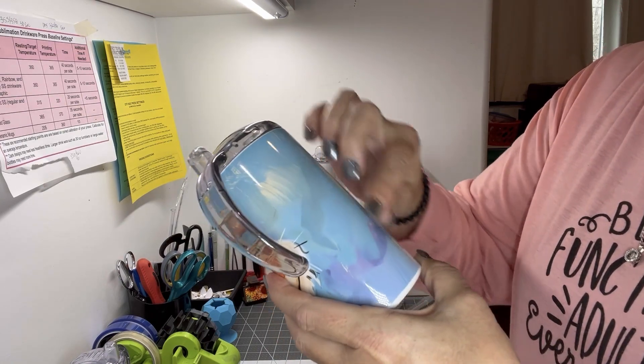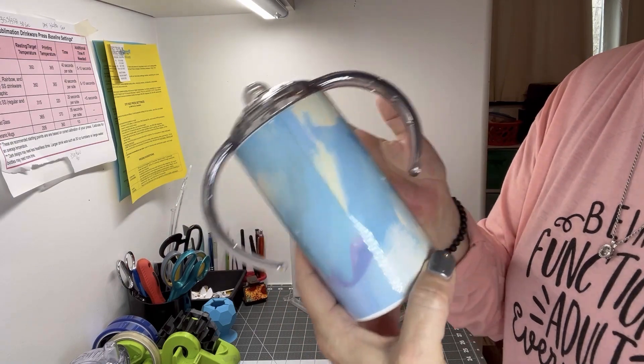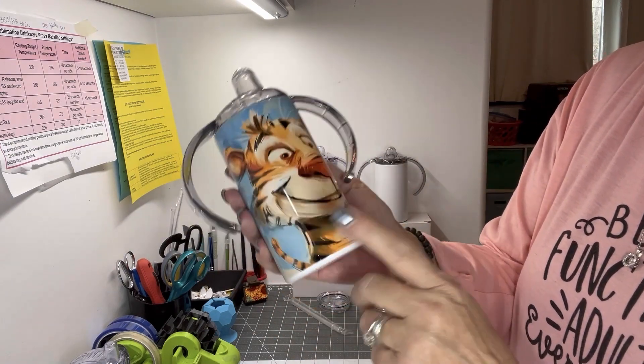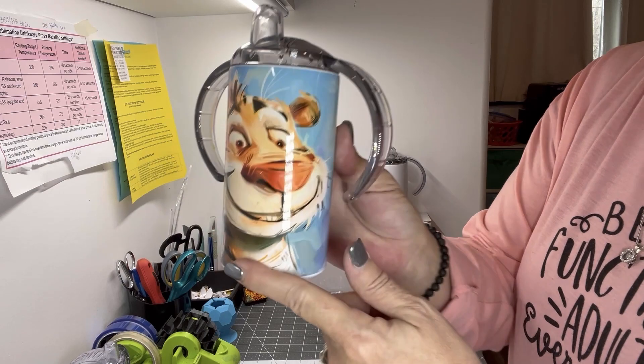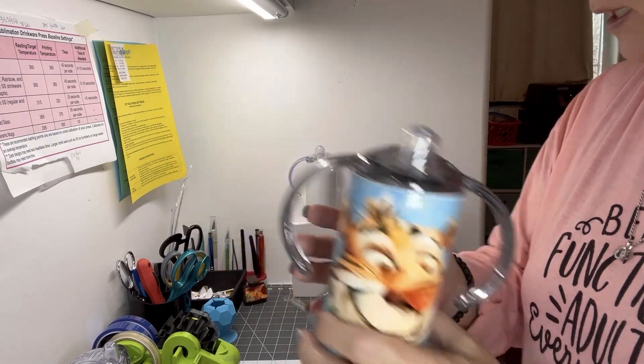The designs come with a little area that you can put a name. I just cut that off since I wasn't doing a name. This is a cute little tiger that I put on the glossy one.